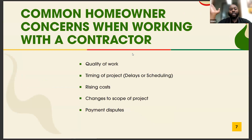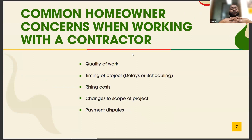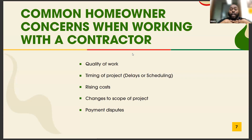Common homeowner concerns when working with a contractor include quality of work — even with a defined scope, things can happen. Timing and project delays can and probably will occur, especially with the current economic outlook. Today a project that might have taken four to six months in 2021 could now take eight months or more, not necessarily due to the contractor, but due to access to materials.